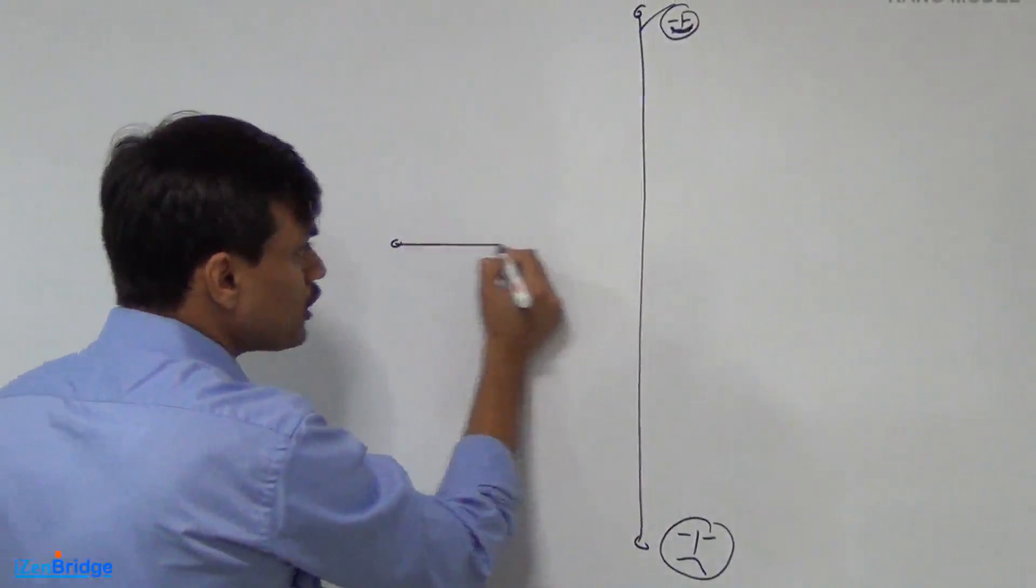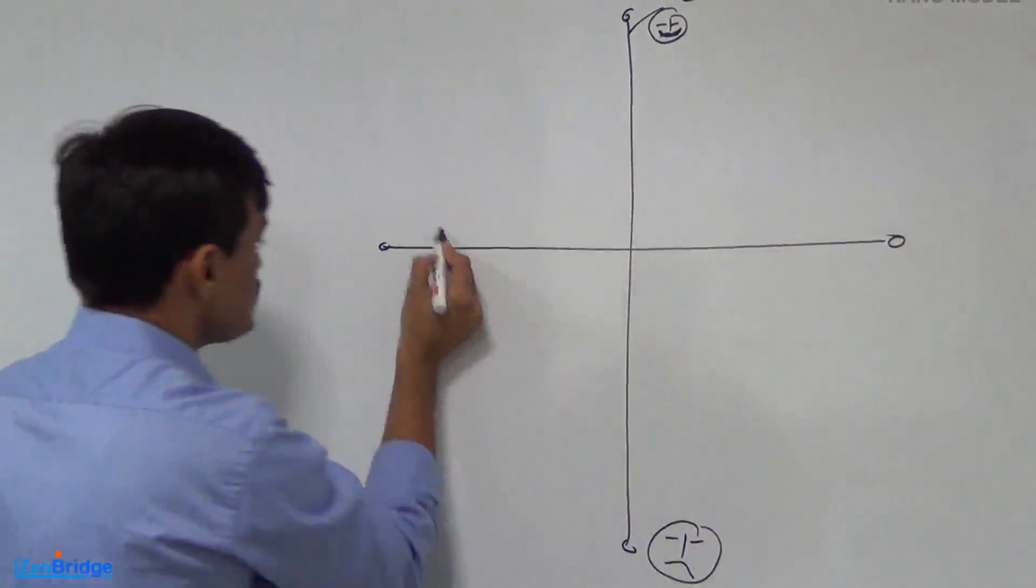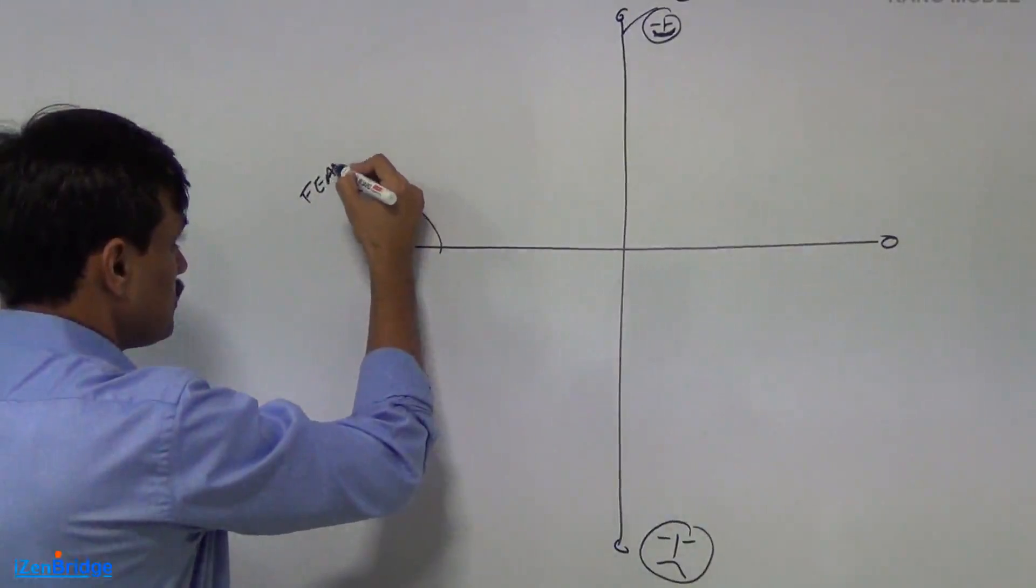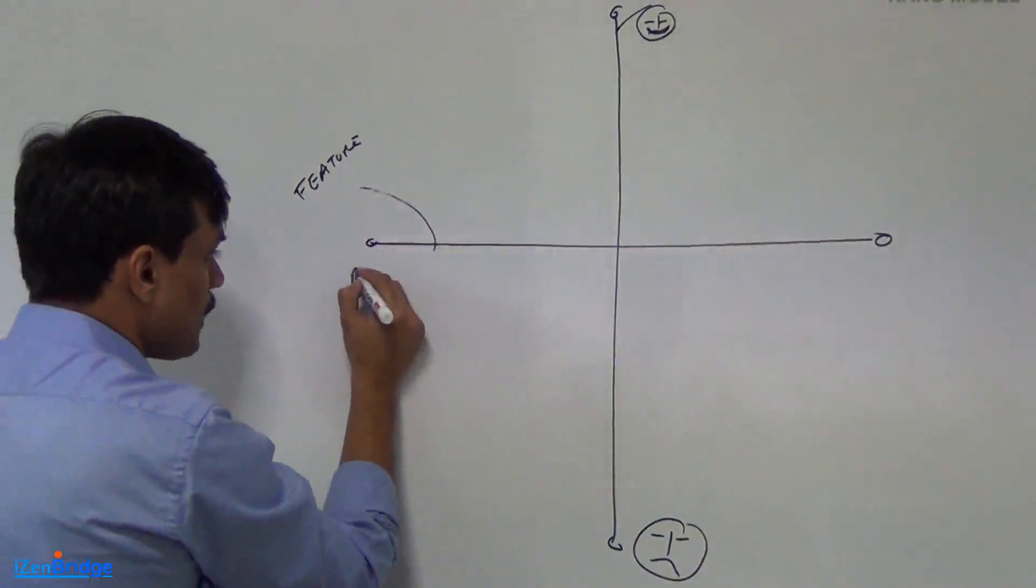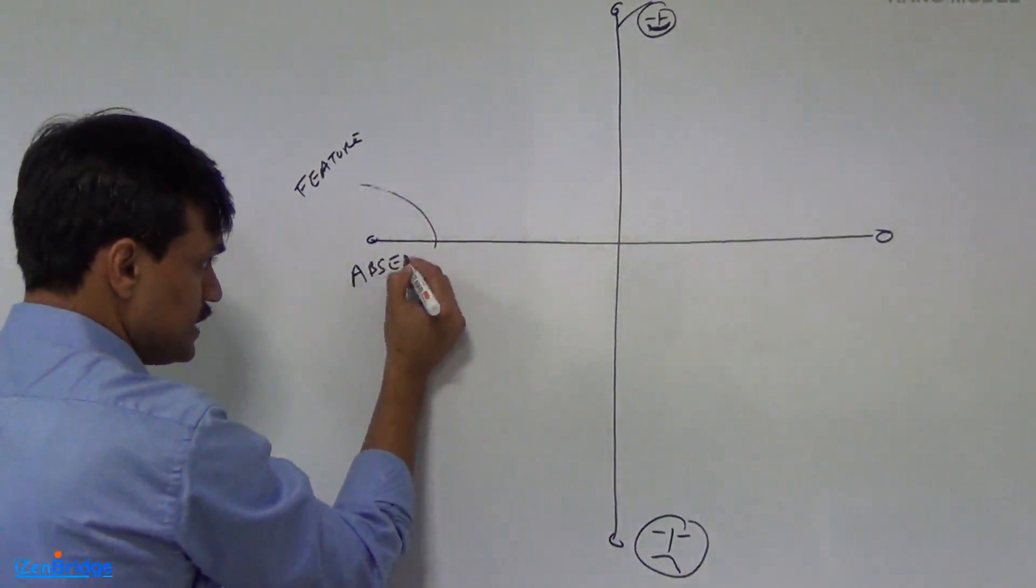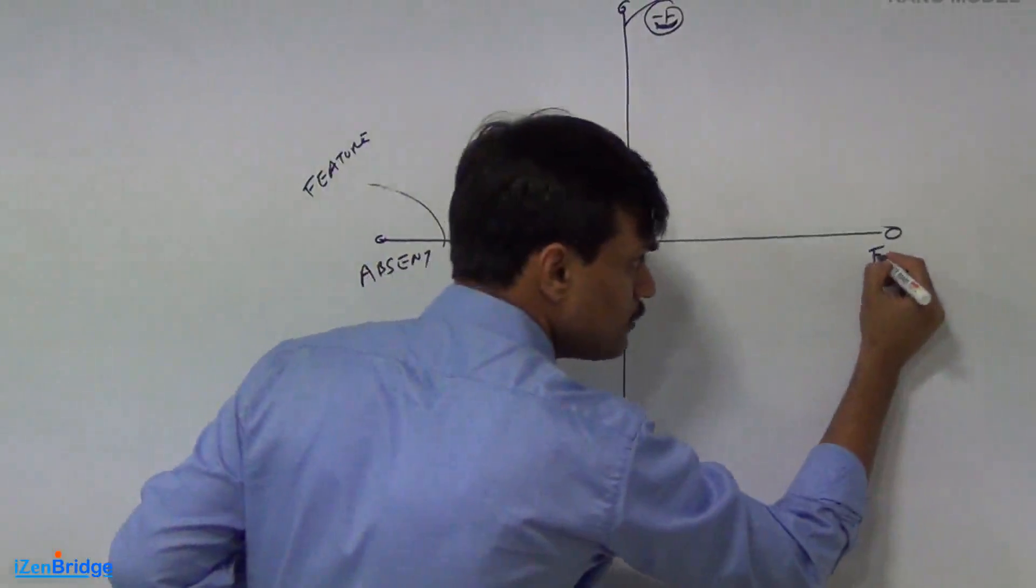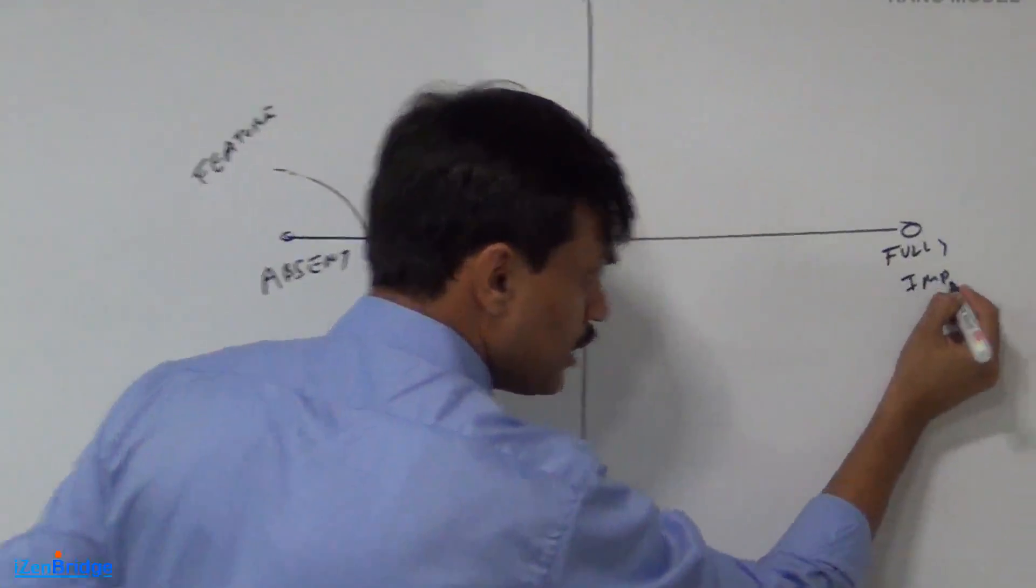Another dimension in this model represents the presence or absence of a feature. If the features are absent, they will fall in this segment. If they are fully implemented, they will fall here.